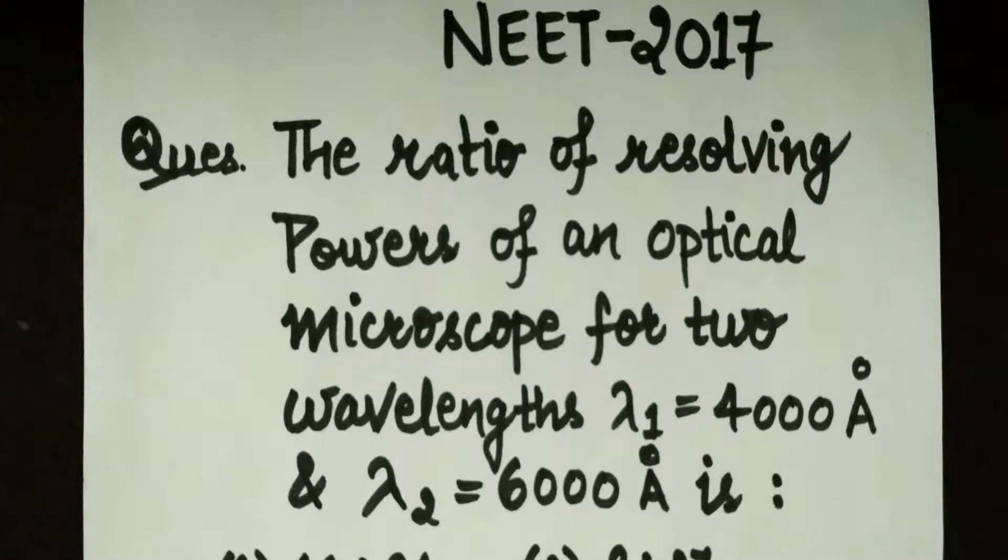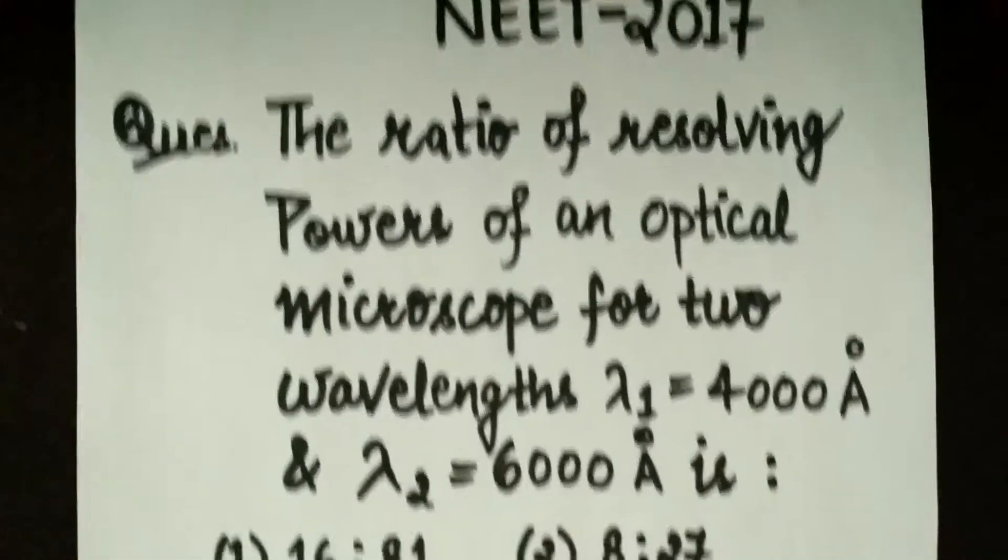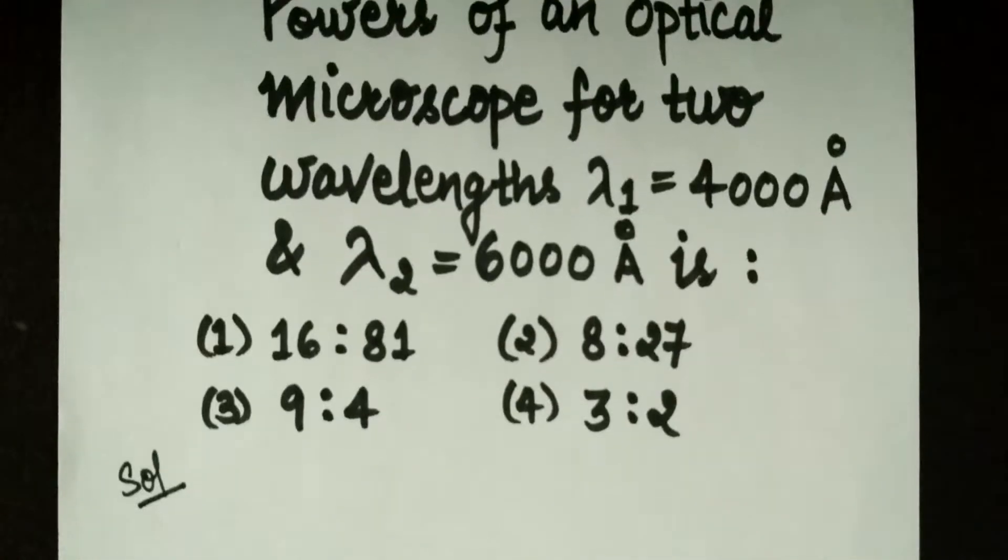The ratio of resolving powers of an optical microscope for two wavelengths: lambda 1 equals 4000 angstrom and lambda 2 equals 6000 angstrom is? We have four options. So let's find the solution.